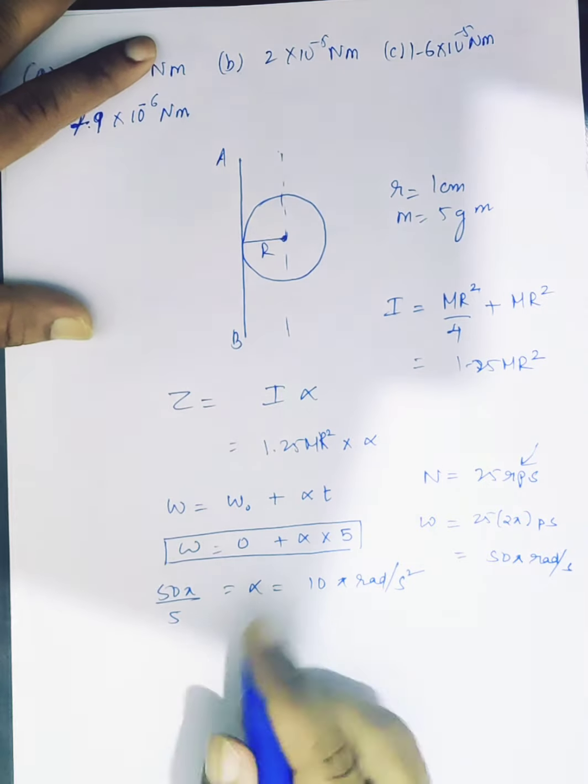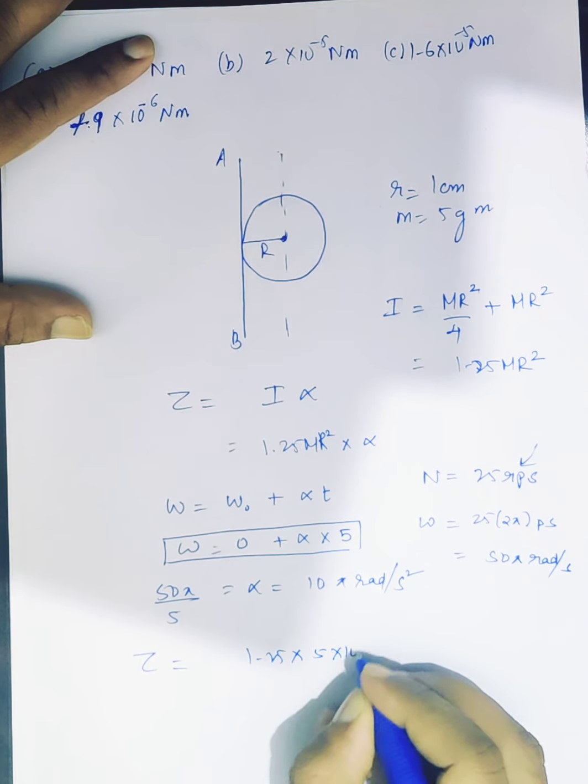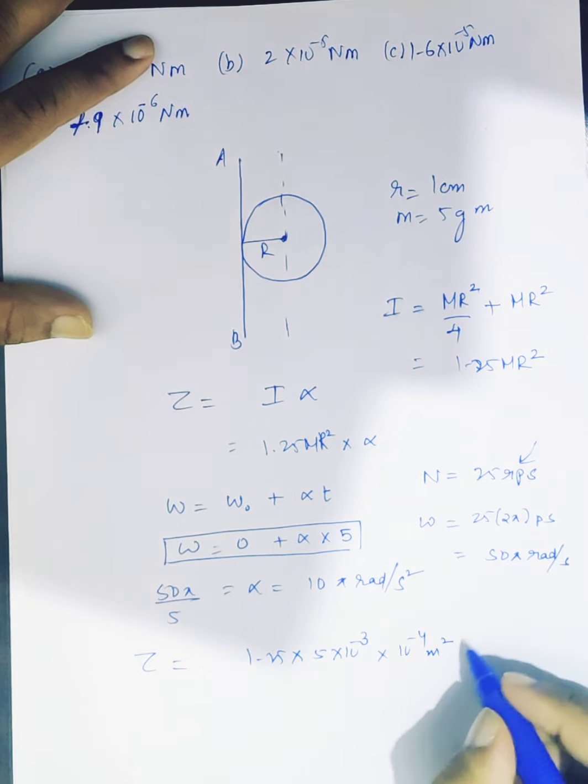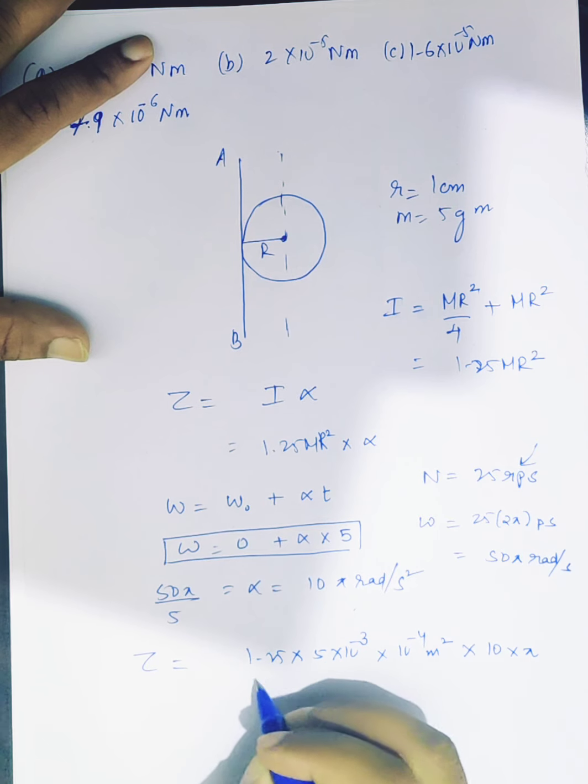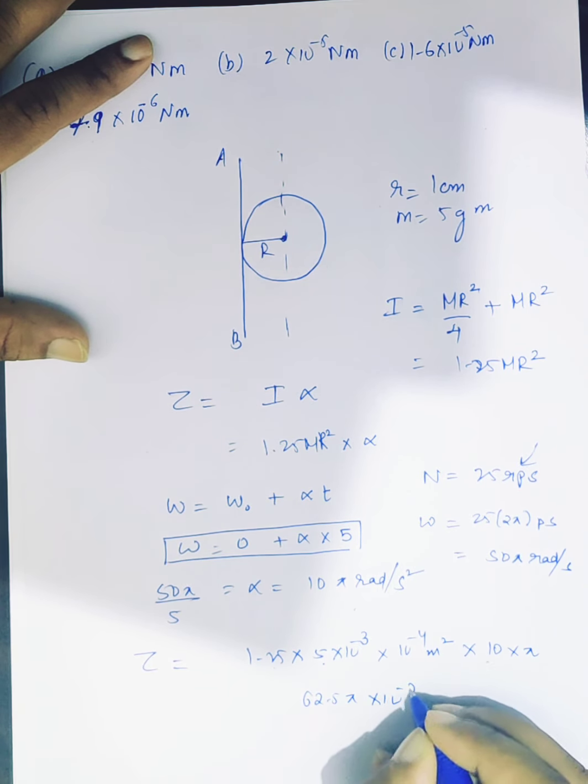Here the torque is 1.25, mass is 5 grams which is 10 power minus 3, radius is 1 centimeter so 10 power minus 4 meter square. It is squared, into 10 into pi. So we have 5 by 4, 1.25 into 5 is 6.25, 62.5 pi, 10 to the power minus 7.